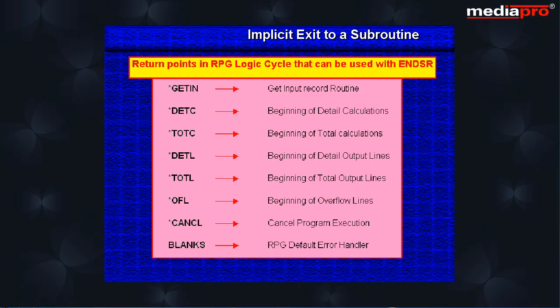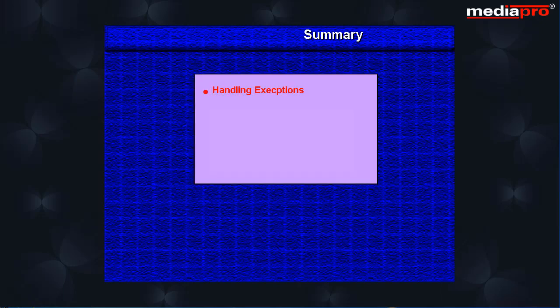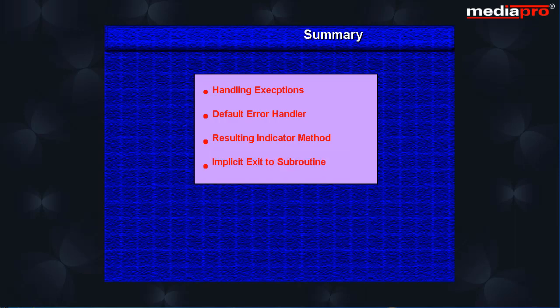With this, we have come to the end of this chapter. We looked at the different methods that can be used to handle exceptions from an RPG program: the default error handler, the resulting indicator method, and the implicit exit to a subroutine method.